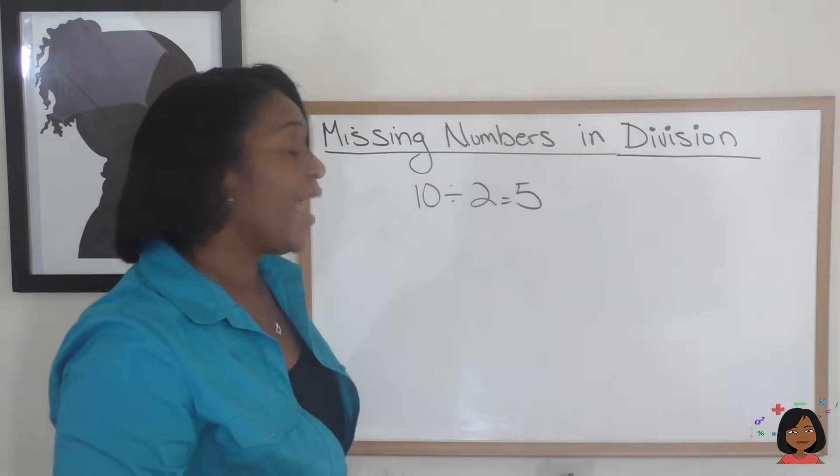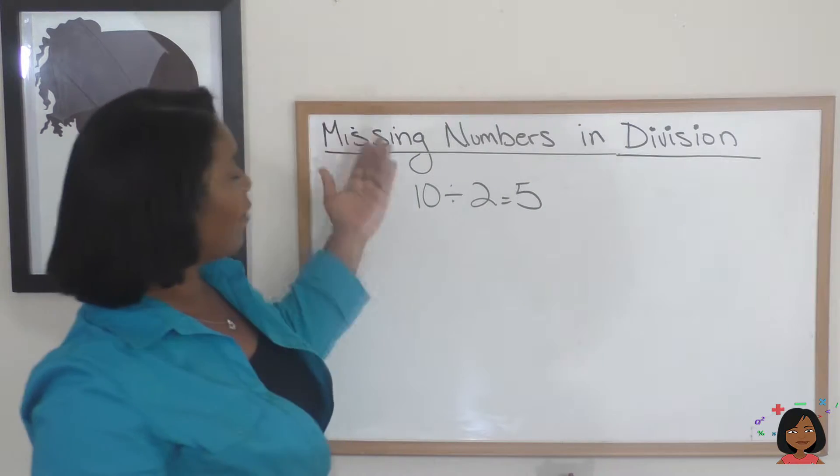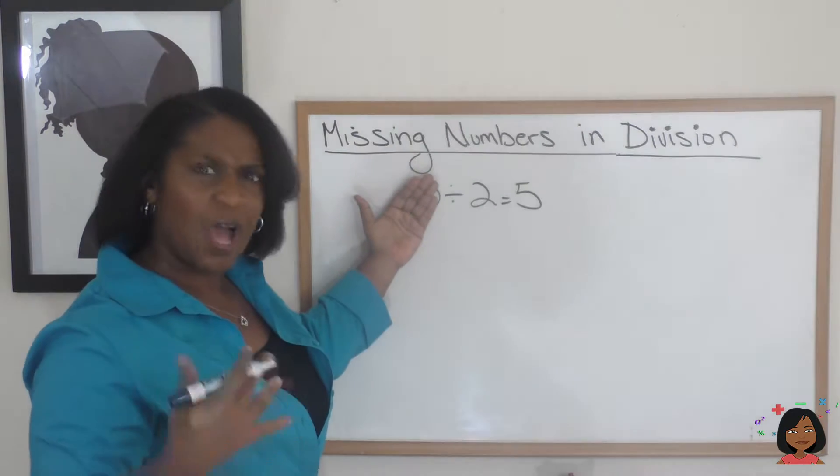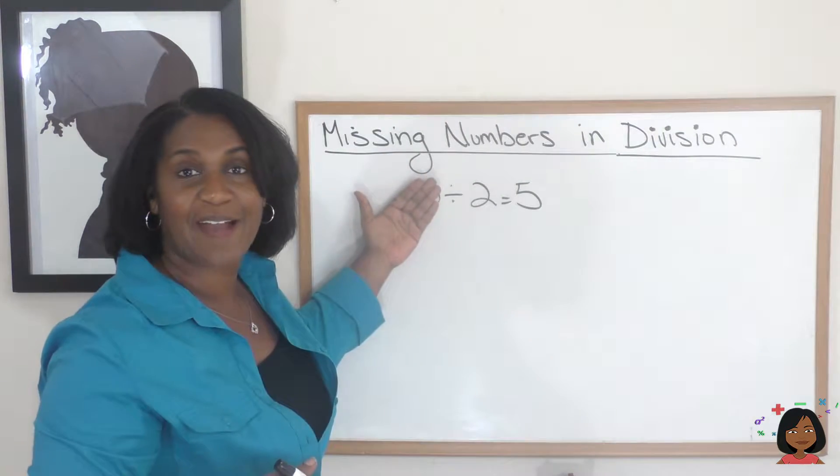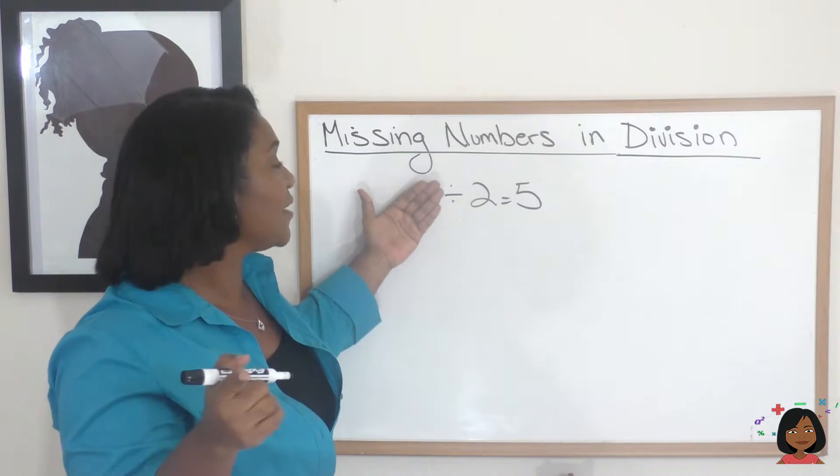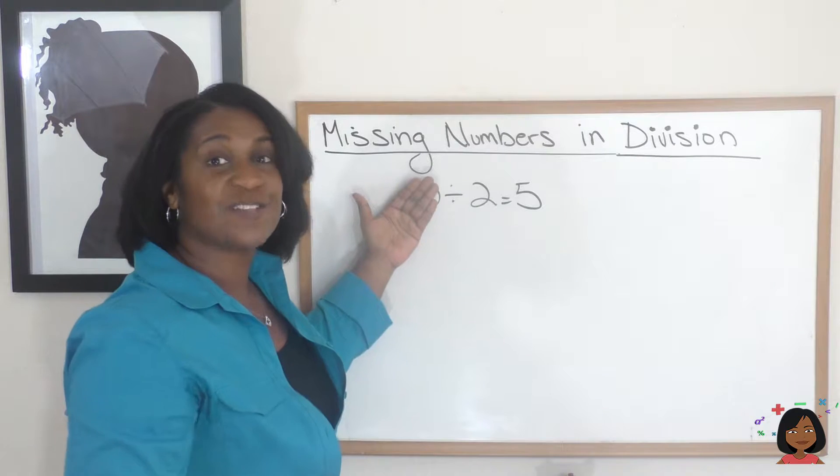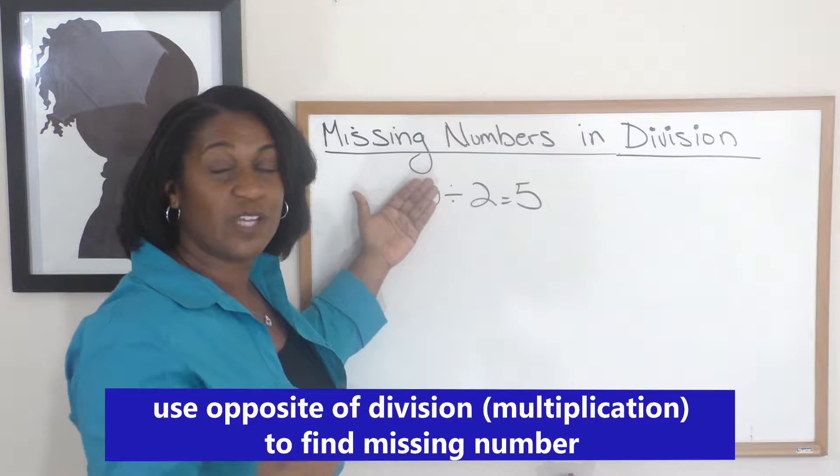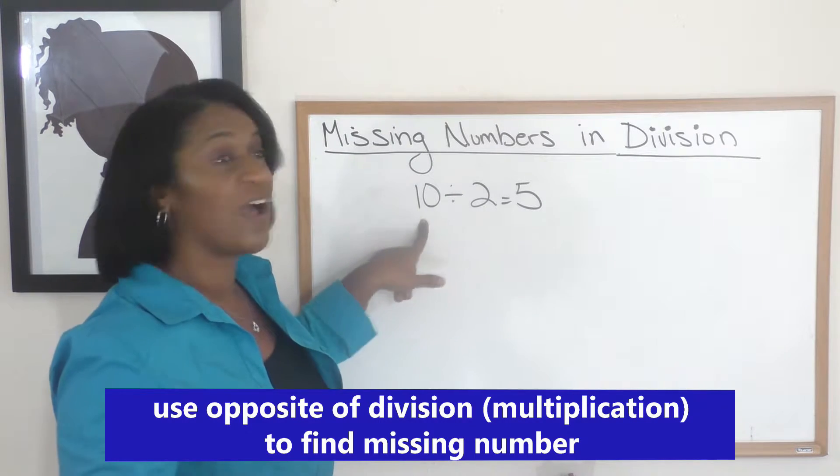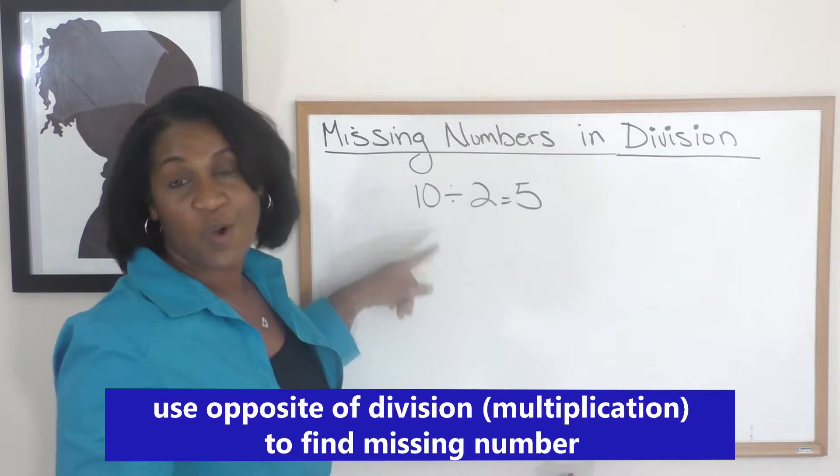If I wanted to cover up the 10, how would I find that number using the two numbers I have? I know that 5 times 2 is 10, so we can use the opposite - we can use multiplication to help us find our missing number. Let's try it with a slightly bigger example.